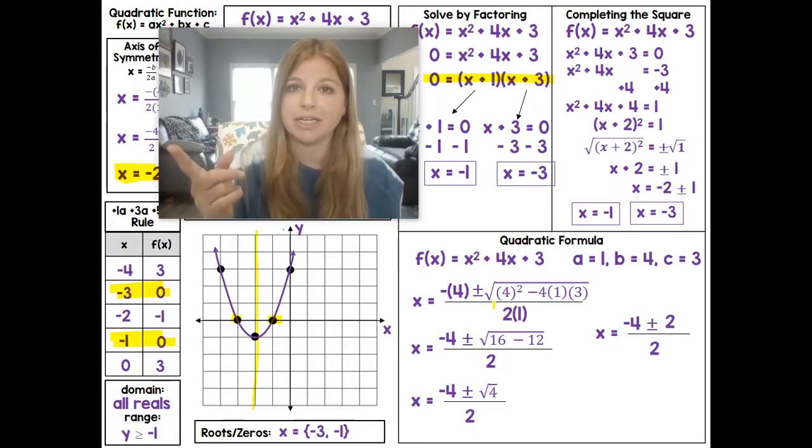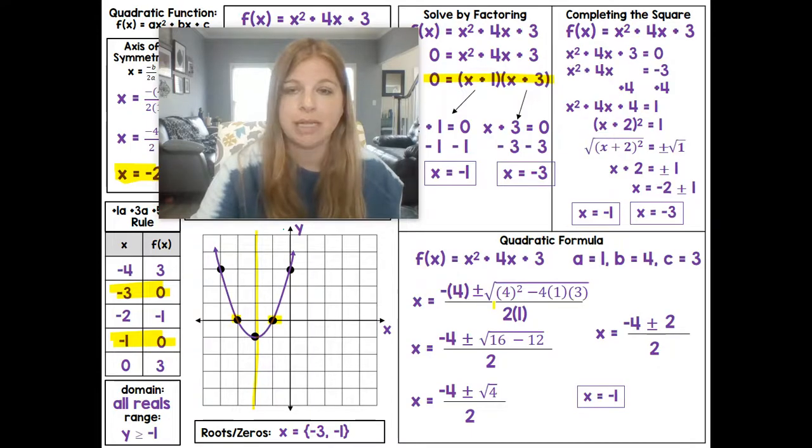Now remember, we use the plus sign to get our first solution, minus sign to get our second. -4 + 2 is -2. Then -2 / 2 is -1. Now let's use the minus sign. -4 - 2 is -6. -6 / 2 is -3.